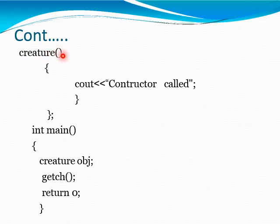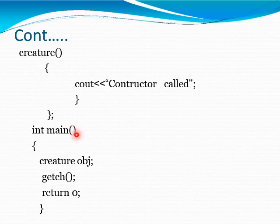This is a Constructor. Inside this Constructor, we define cout with the message 'Constructor called', and the class is closed. Then, in the main function, we create an object using the class name. When the object is created, the Constructor is automatically called — there is no need to call it explicitly. The method is automatically called when an object is created, and the function returns 0.